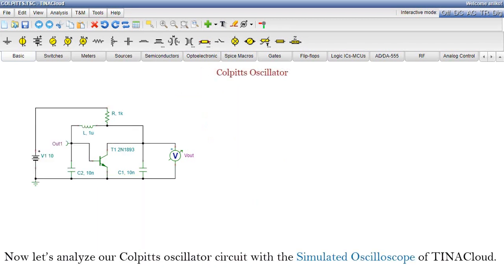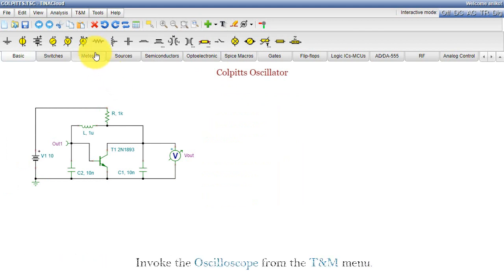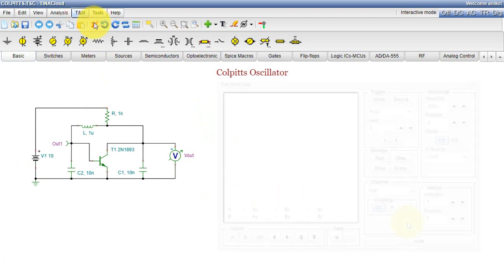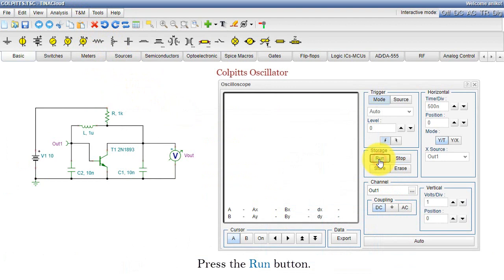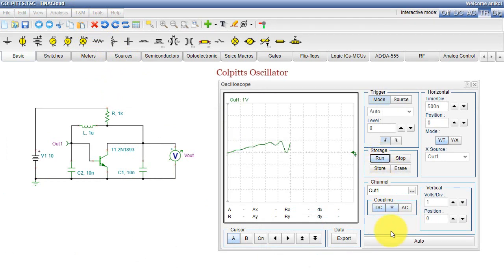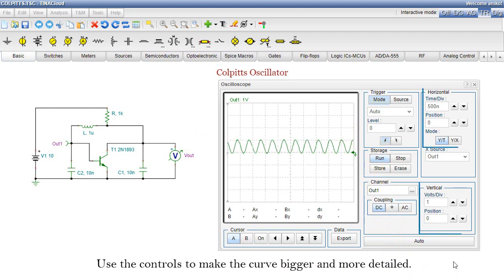Now let's analyze our colpits oscillator circuit with the simulated oscilloscope of TINA Cloud. Invoke the oscilloscope from the TNM menu. Press the Run button. The OUT1 signal appears. Use the controls to make the curve bigger and more detailed.